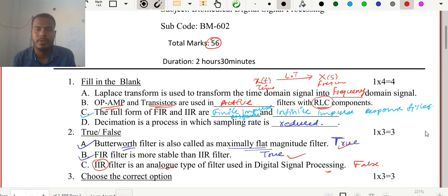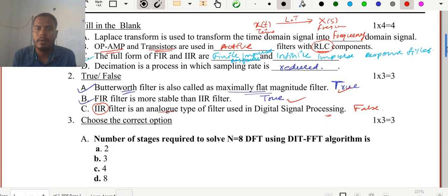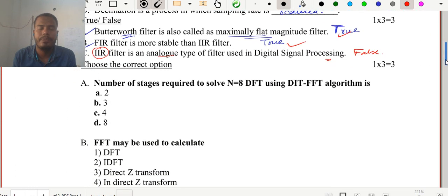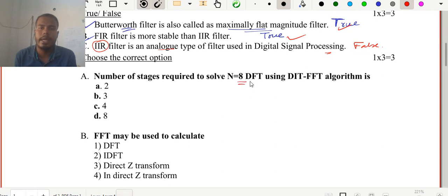Now come to the next question, we'll be discussing about the MCQs. Number of stages required to solve N=8 DFT, so this is 8-point DFT. If N is equal to 4, then it will be 4-point DFT. In case of 4-point DFT, we have done through butterfly algorithm with the help of the FFT algorithm. In that FFT, we always require two stages to perform. But for N equal to 8, we need three stages.